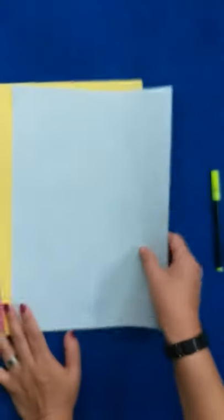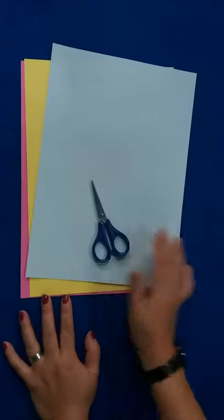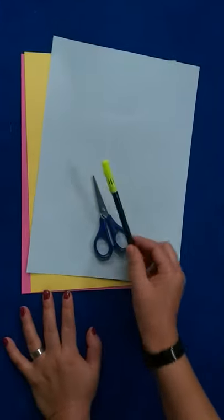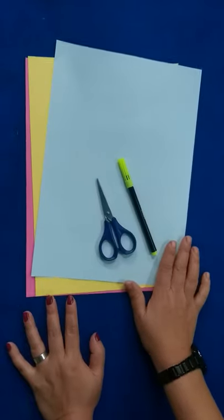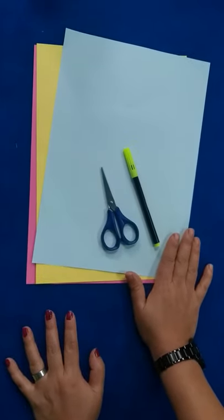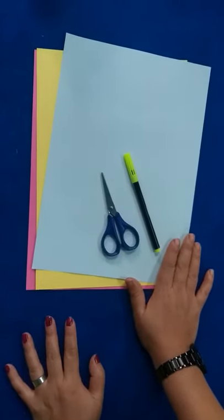This is the color paper, scissor, and sketch pen. These are the things which we require to make origami craft. So let's start.